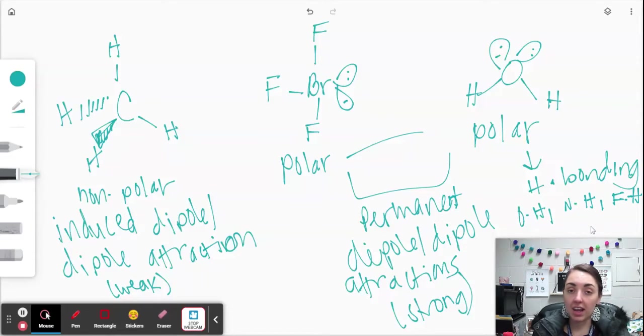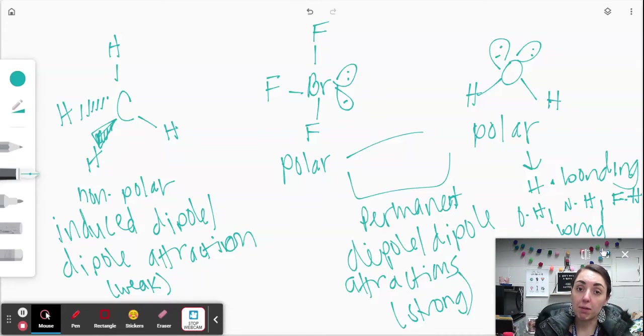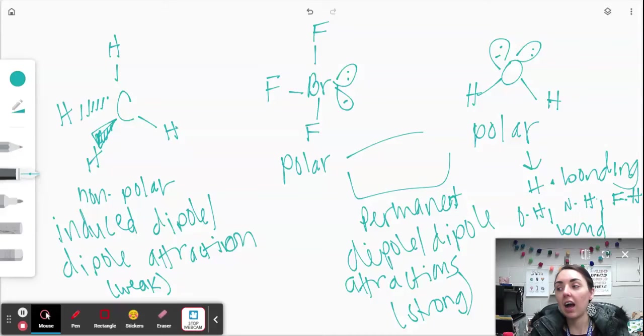That doesn't just mean that F and H or N and H and O and H are in your molecule. It means they're actually bonded together. So you have an O bonded to an H, an N bonded to an H, or an F bonded to an H. That gets you this additional type of permanent dipole-dipole attraction called hydrogen bonding. So it's still permanent dipole-dipole, it's just a special type of permanent dipole-dipole called hydrogen bonding.